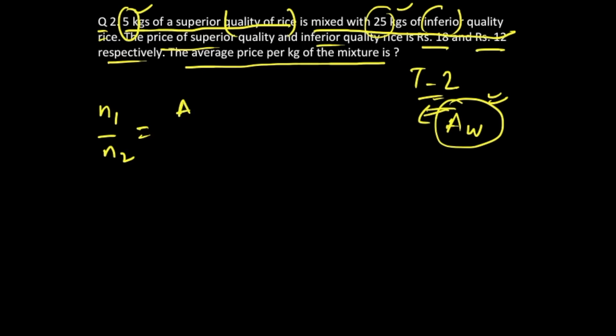The equation is AW minus a2 upon, or rather you should write it differently because we always consider a2 to be of dearer cost: a2 minus AW upon AW minus a1. Try to remember it in pictorial form as well, and this is where you get n1 and n2.